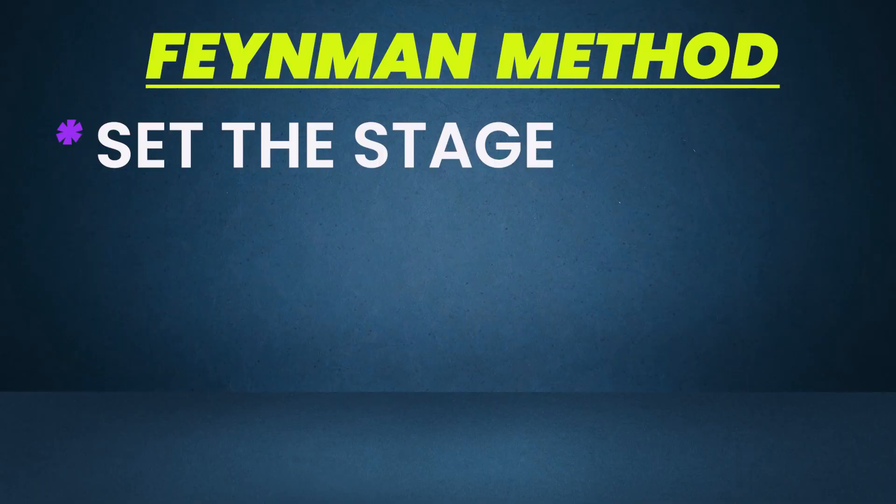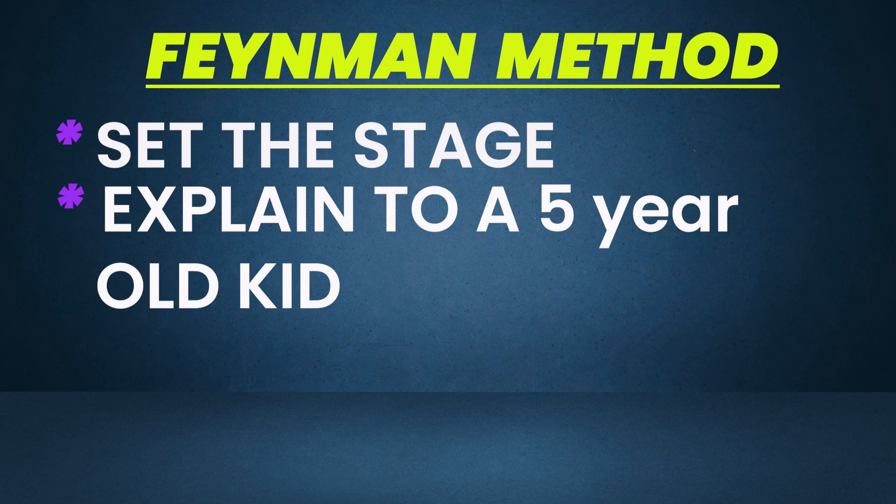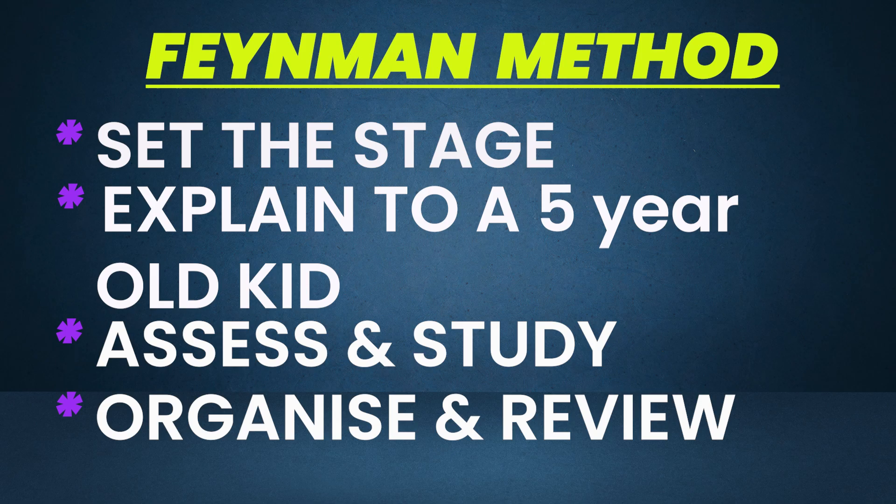So this is the Feynman Method. Stage one: set the stage — write down everything you want to know about the topic. Step two: try to explain it to a five-year-old child — rocket science or whatever. Step three: assess and study — identify where something is missing and fill in the blanks. Step four: organize — reorganize the whole material, review the whole thing, and rewrite it. If you can follow these four steps,